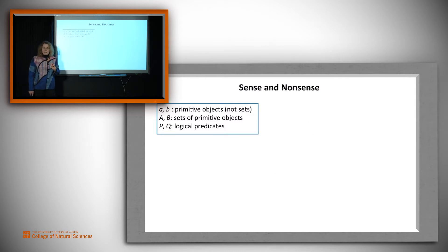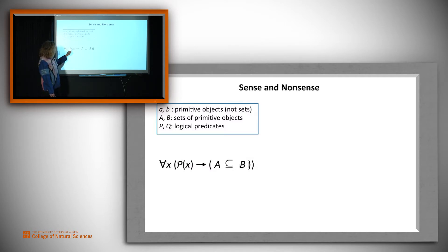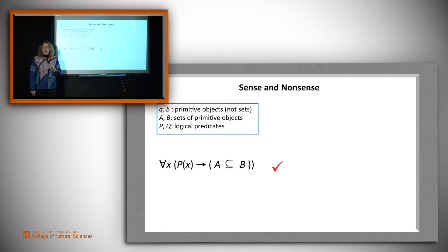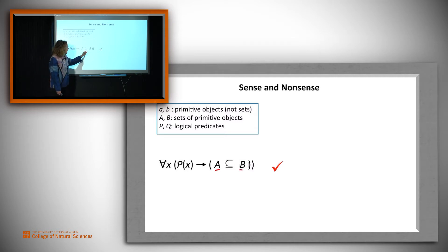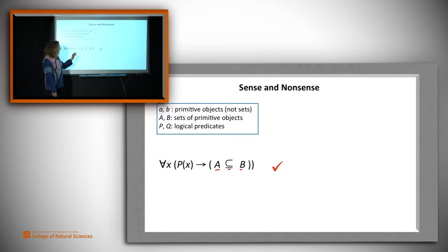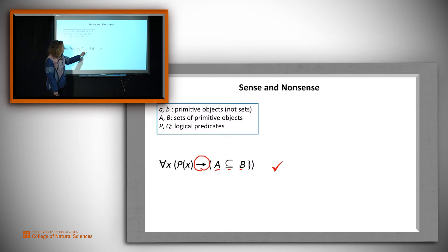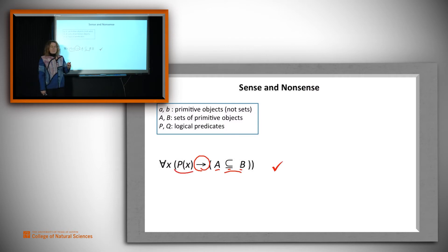Let's look at another example. Suppose I write: for all X, P(x) implies A is a subset of B. That makes sense. A and B are sets, and a set can be a subset of another one — that produces a logical claim. 'Implies' is a logical operator, so it needs two logical claims as its arguments. We've established that A⊆B is one, and P(x) is the other. So we're good.